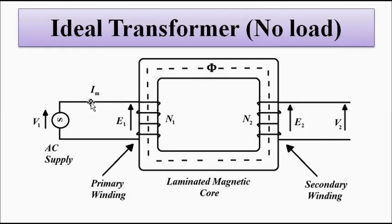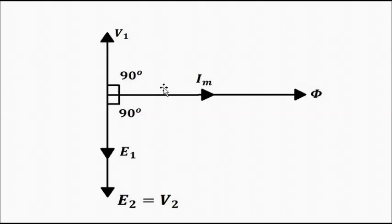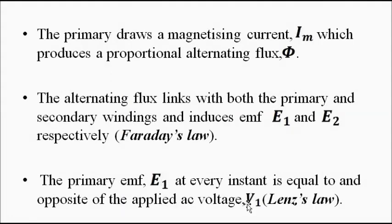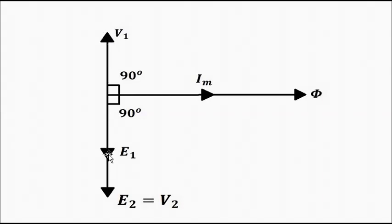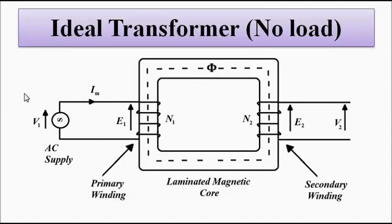When current flows through a purely inductive coil, it will lag behind the applied voltage by 90 degrees. Here the applied voltage is V1, so IM will lag behind V1 by 90 degrees. E1 and V1 are 180 degrees out of phase but equal in magnitude — V1 is the AC supply voltage and E1 is the primary induced EMF. The number of turns of primary and secondary windings are different, so as per the number of turns, E1 and E2 will be different — it can be more or less.